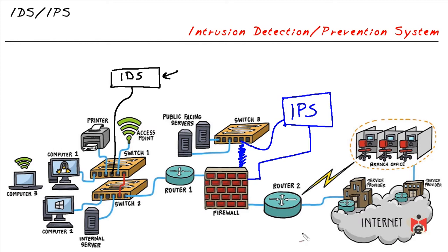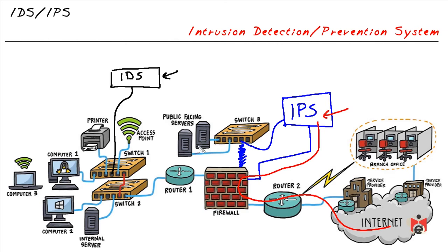With an IPS inline, any traffic reaching the public servers must pass through the router, firewall, and then the IPS for analysis. If traffic is bad, the IPS drops those packets right there. Bad traffic is stopped at the IPS and doesn't proceed further into the network, while traffic deemed acceptable is forwarded to its intended destination.